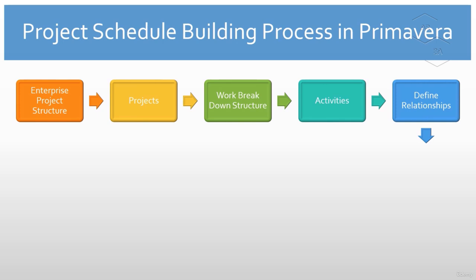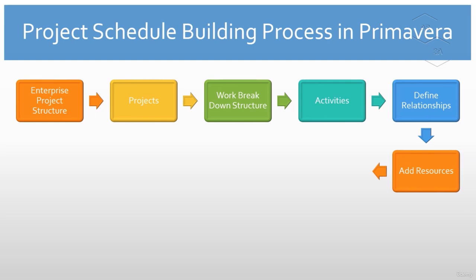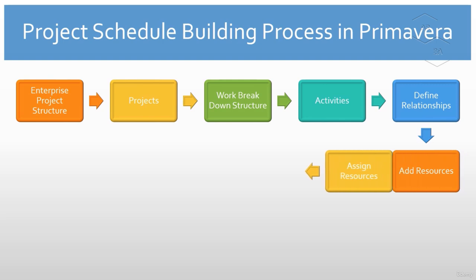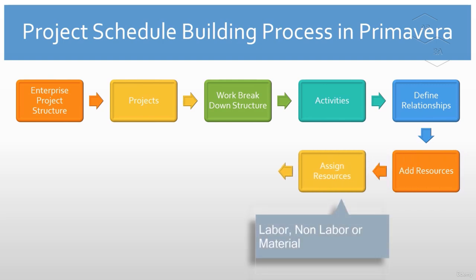Please note that we will explain the activity relationship types in a separate lesson. In order to complete the work for the project activities or tasks, we will create and add resources in the Primavera P6 database for these project activities. Then we will assign these resources to the project activities. A resource type can be referred to as a labor, non-labor, or a material resource.